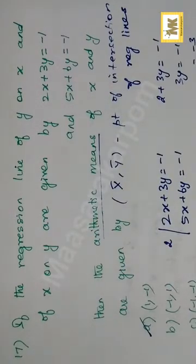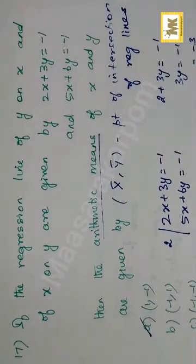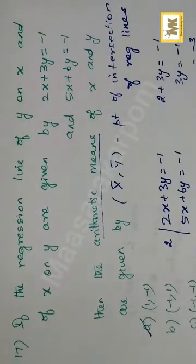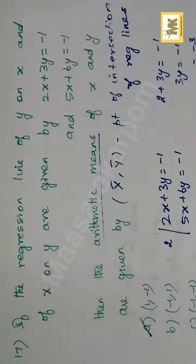From this chapter, given the formula, we have two regression lines. We need to find their arithmetic means, since two regression lines meet at their means. The point where both regression lines join gives the arithmetic mean.